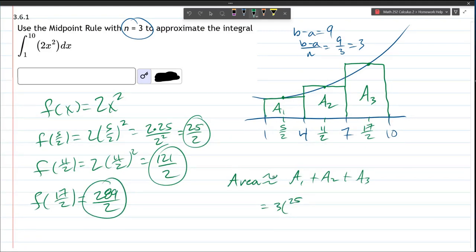25 halves. So, you can definitely factor that 3 out.